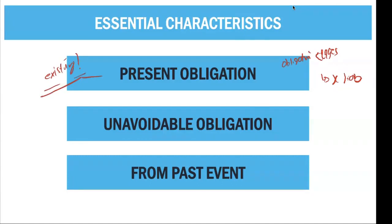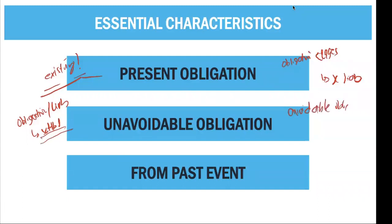Next, it is unavoidable. What do we mean by unavoidable obligation? That obligation or liability should be settled. For a liability to be considered as a liability, there must be a settlement which results in an outflow of economic benefits. Therefore, when we say unavoidable obligation, it means it must be ultimately settled. For example, if a liability says you may or may not settle it — in short, it can be avoided — why would you include it as a liability?